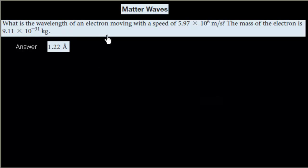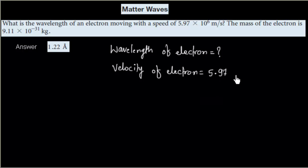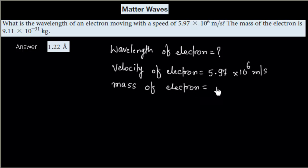We have to calculate the wavelength of an electron. We have been given the velocity of the electron, which is 5.97 × 10⁶ meter per second. We have also been given the mass of the electron, which is 9.11 × 10⁻³¹ kg.